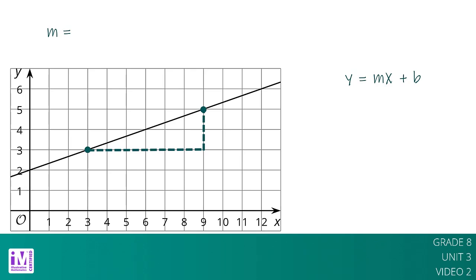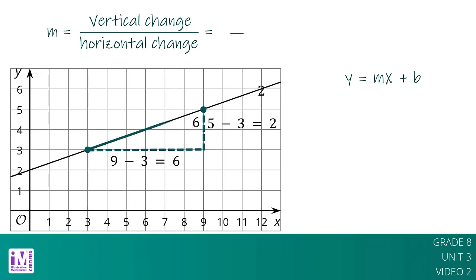The slope m of this line is the quotient of the length of the vertical side of the slope triangle and the length of the horizontal side of the slope triangle. So the slope is vertical change over horizontal change, which is 2 over 6, or 1 over 3.